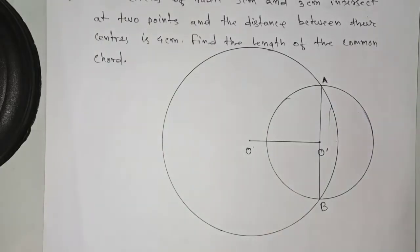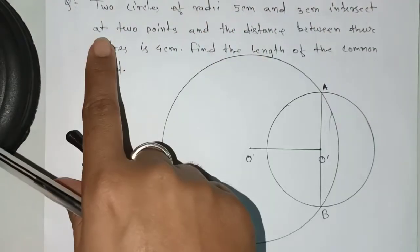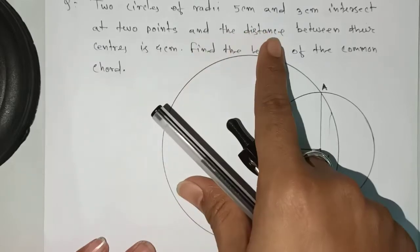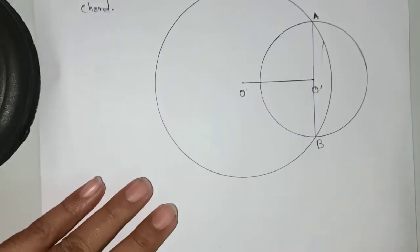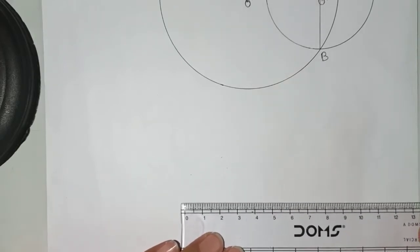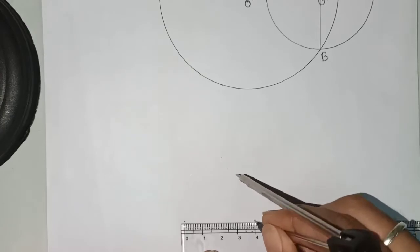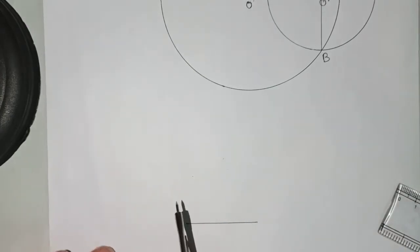How are you going to draw? First you take what they're saying: two circles of radius 5 cm and 3 cm intersect at two points and the distance between the centers is 4 cm. So you take center 4 cm. Here we'll take the measurement that is 4 cm, zero to four.